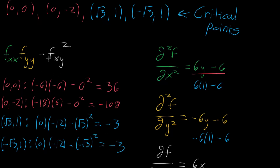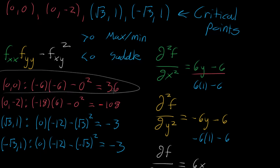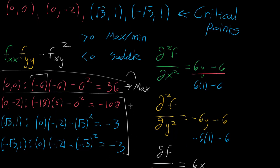So what does the second partial derivative test tell us? If the expression is greater than zero, we have a max or a min. If it's less than zero, we have a saddle point. The only term greater than zero is the first one — the point (0,0). To analyze whether it's a maximum or minimum, notice that f_xx and f_yy were both negative, indicating negative concavity, so this corresponds to a local maximum. All of the other three gave negative numbers, so they are all saddle points.